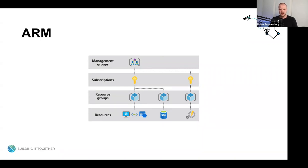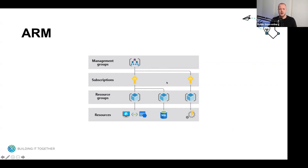The lower levels inherit settings. For example, when you assign a policy to management groups, the subscriptions that belong to the management group automatically inherit the policy configuration. Management groups usually have multiple subscriptions, subscriptions have numerous resource groups, and resource groups contain various resources.